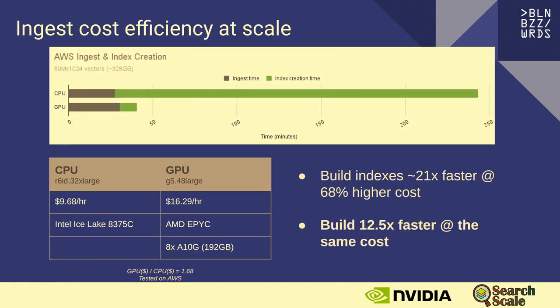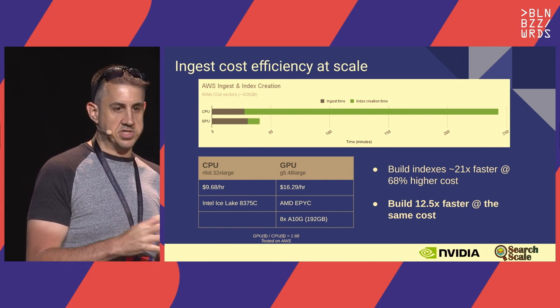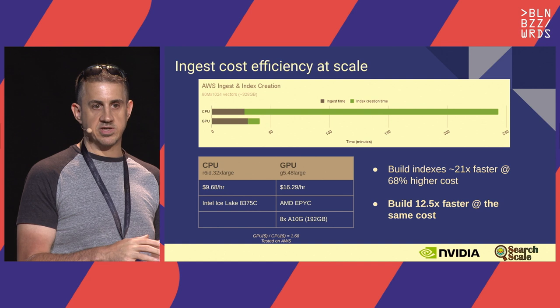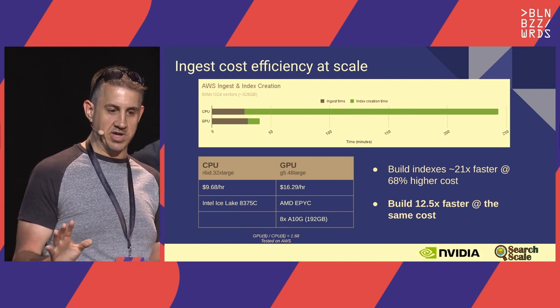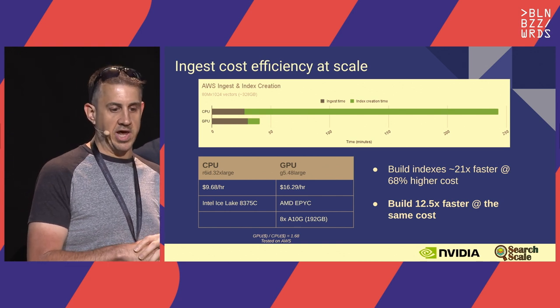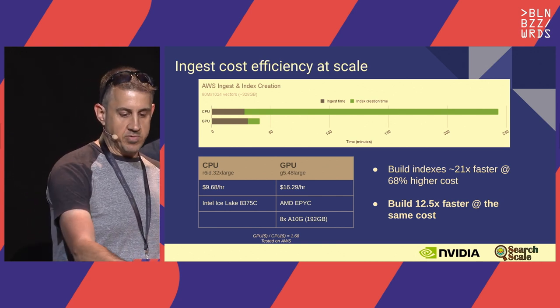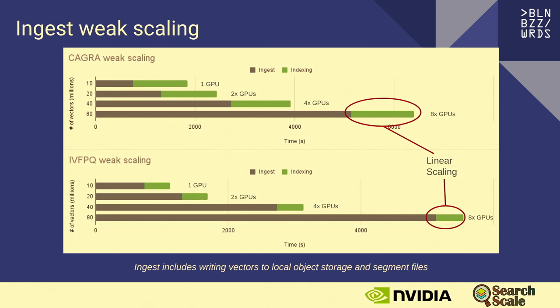Cost efficiency comes up a lot—people think GPUs and they think expensive, but that's not always the case. In a small case study we did here: yes, the GPU is more expensive per hour, but you can do things a lot faster. When you offload computations like index builds to the GPU, you end up saving money. Without cost normalizing, you could think of this as building 21x faster for 68% higher cost. If you cost normalize, you still get 12.5x faster build.